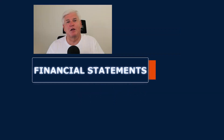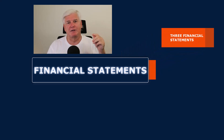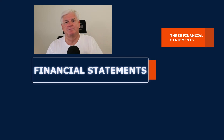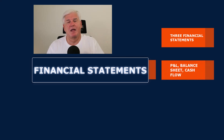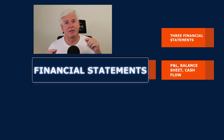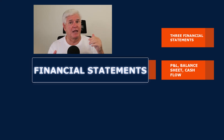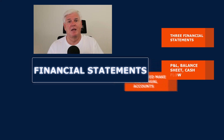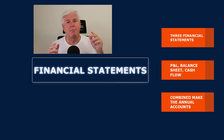Three takeaway bullet points: there are three financial statements — P&L, Balance Sheet, and Cash Flow Statement. The three statements are connected: the P&L is connected to the Balance Sheet via retained earnings, and the first line of the Cash Flow Statement is retained earnings.